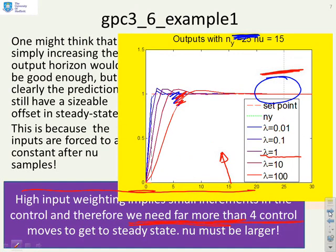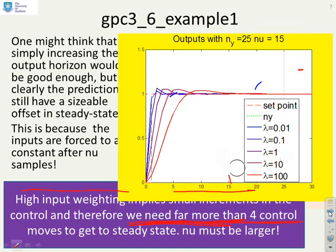Here's an example then, the same example but what I've done is you see I've made nu equal to 15 so I've given myself lots and lots of control moves to try and deal with this issue. And what do you notice? Now ny of 25 is more than ample. So the biggest problem wasn't really that the output horizon wasn't long enough, the problem was that the input horizon wasn't long enough because I didn't allow myself enough time for the inputs to get to the steady state. But if I go to nu equals 15 now I've got time and now I can actually get quite good behaviour with lambda equals 100.